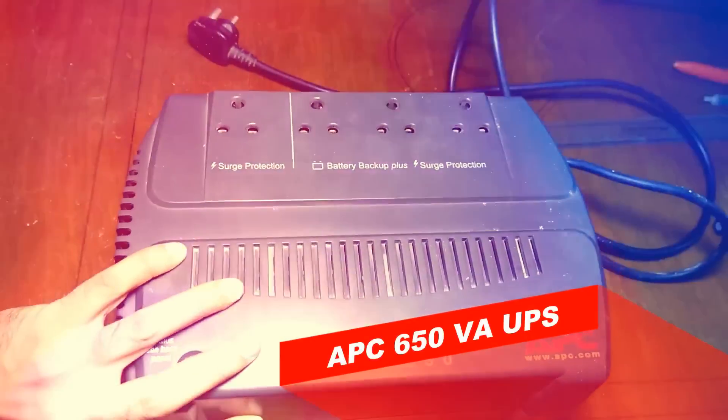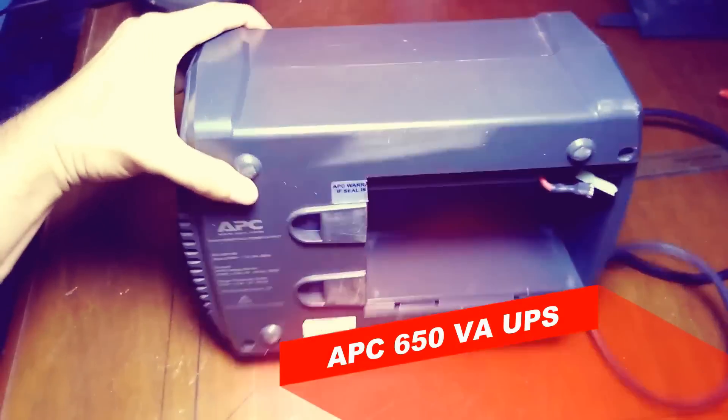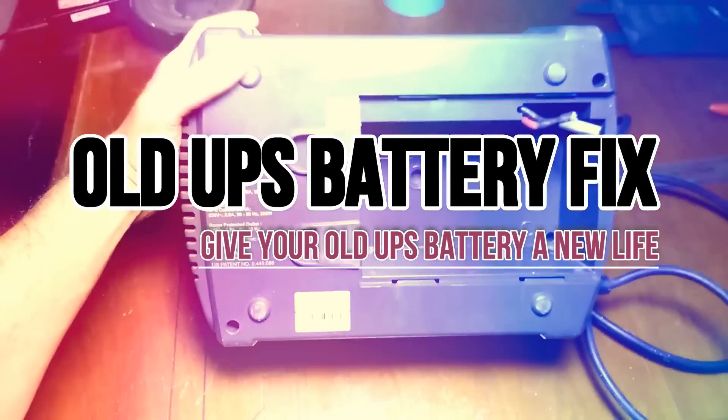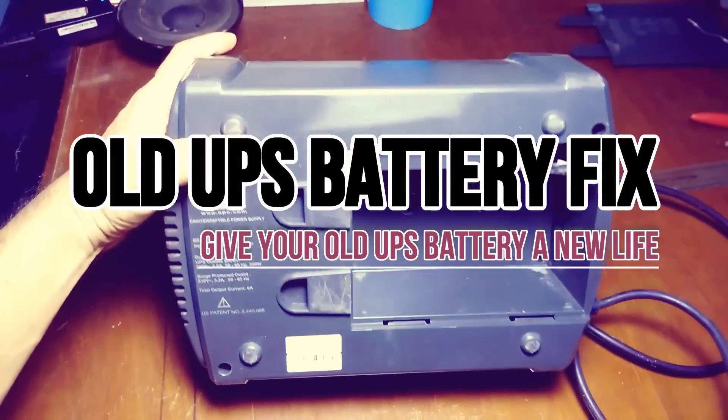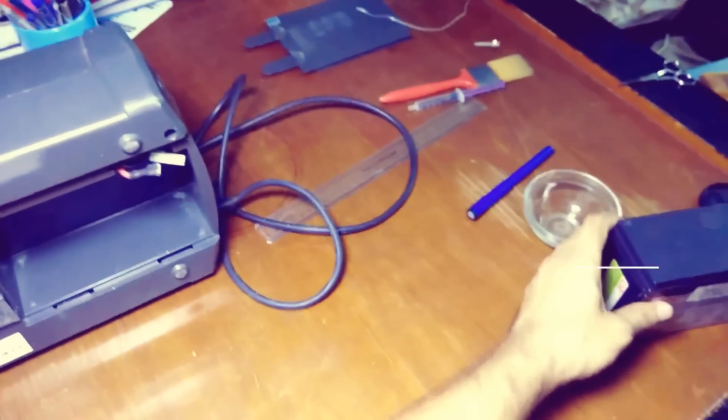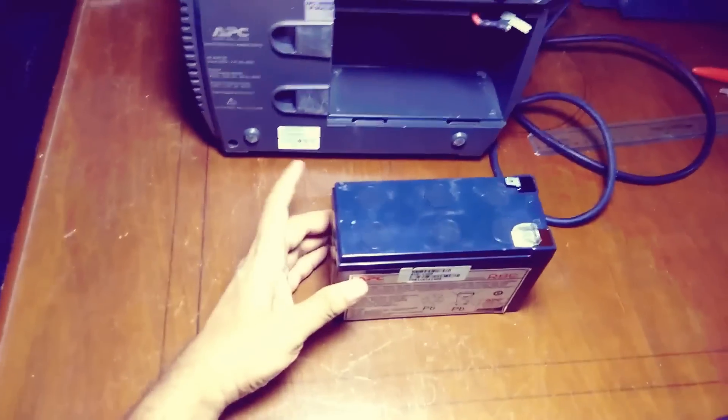What is going on guys, today I have this 650BA APC UPS which battery is kind of dying. I've already removed the battery and today in this video I'm going to show you if you have an old UPS battery and it's kind of dying, how you can fix it. So let's get started.